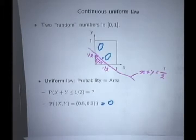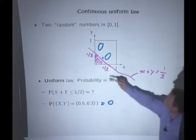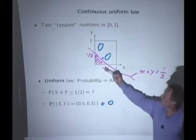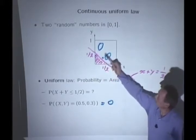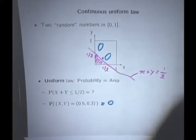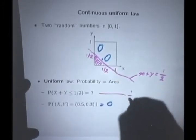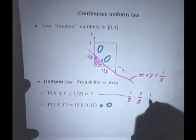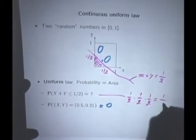So you describe the event visually, and then you use your probability law. The probability law that we have is that the probability of a set is equal to the area of that set. That's all we need to find is the area of this triangle, which is one-half times one-half times one-half equals to one-eighth.